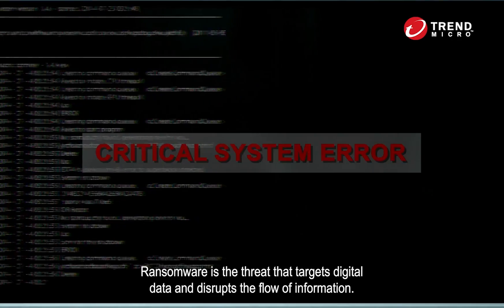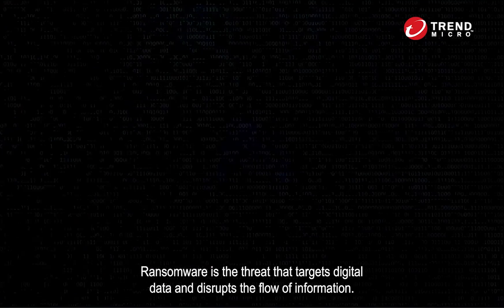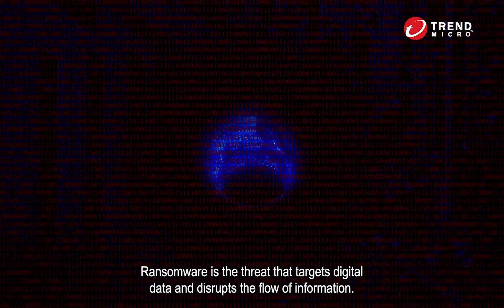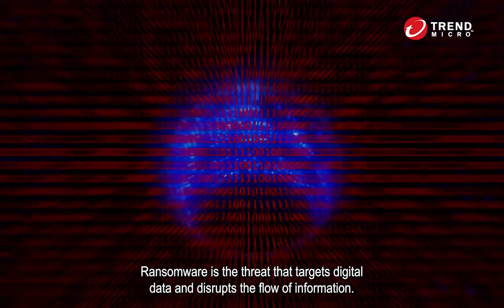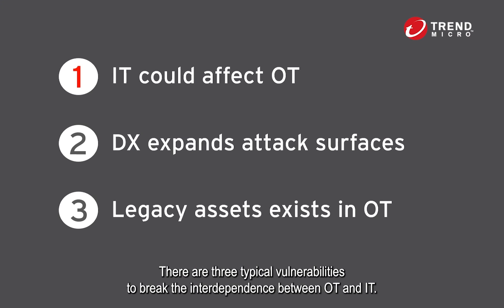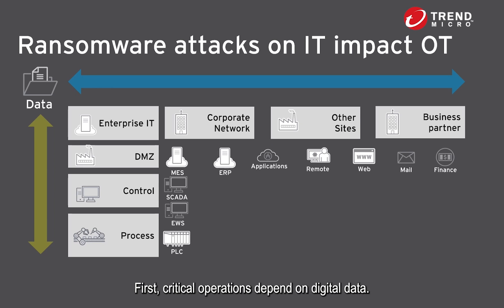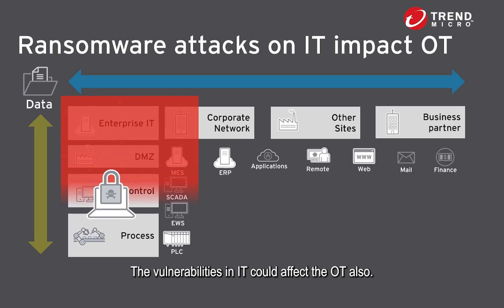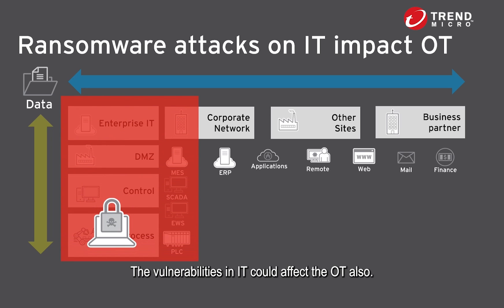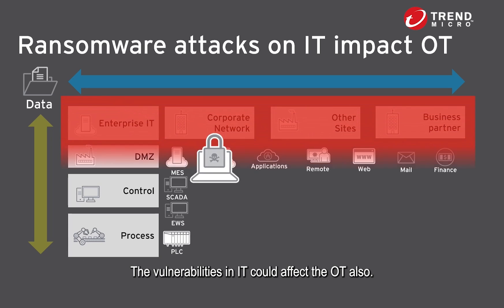Ransomware is a threat that targets digital data and disrupts the flow of information. There are three typical vulnerabilities that break the interdependence between OT and IT. First, critical operations depend on digital data; however, a vulnerability in IT could affect OT as well.